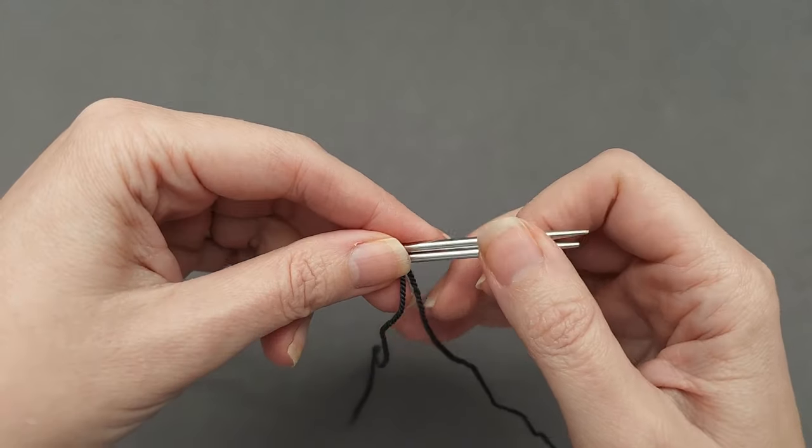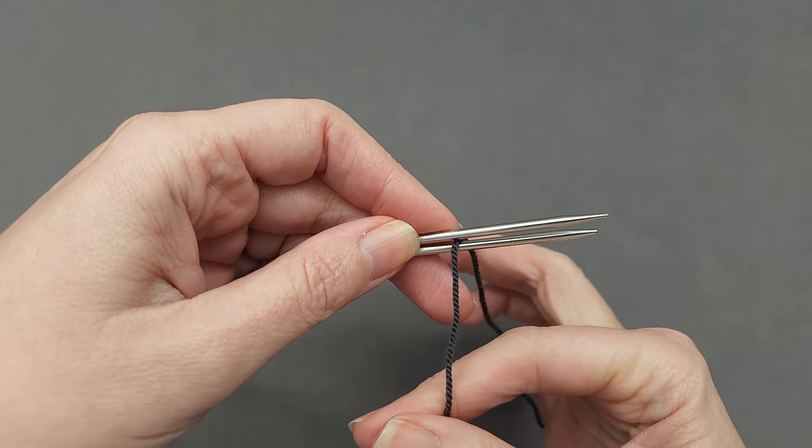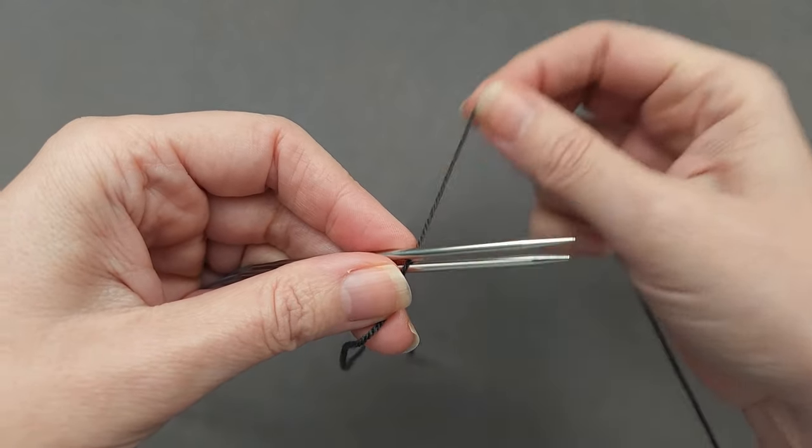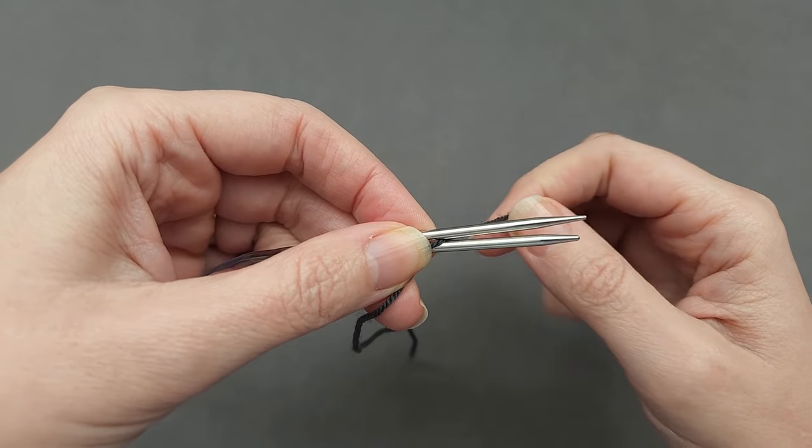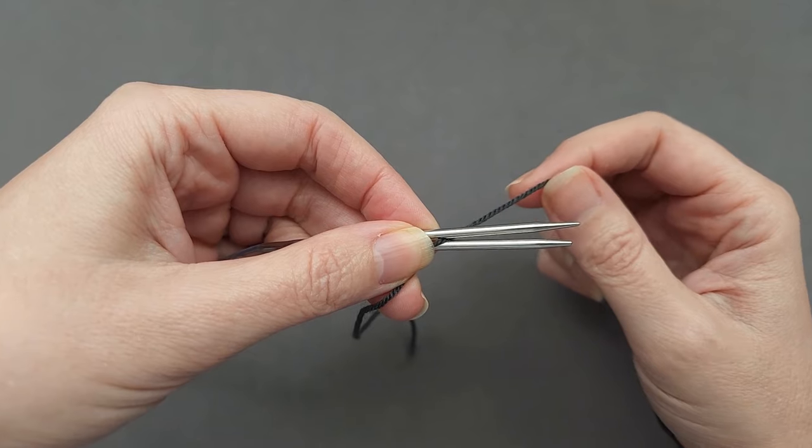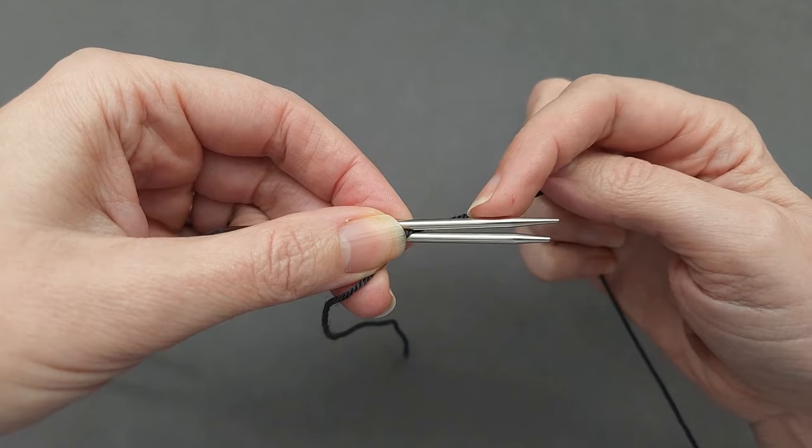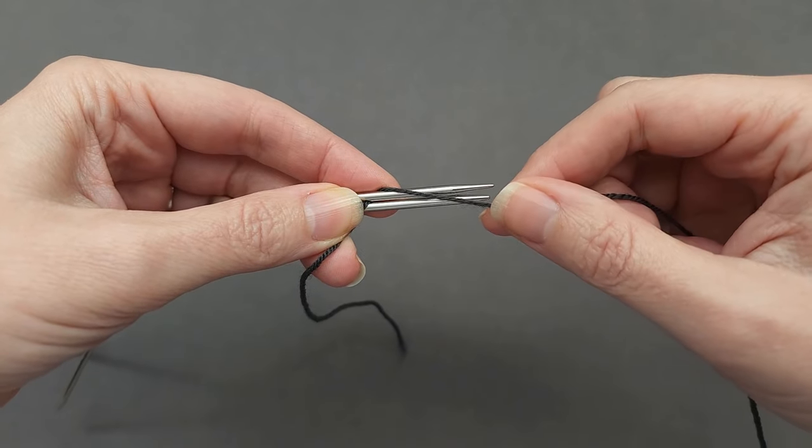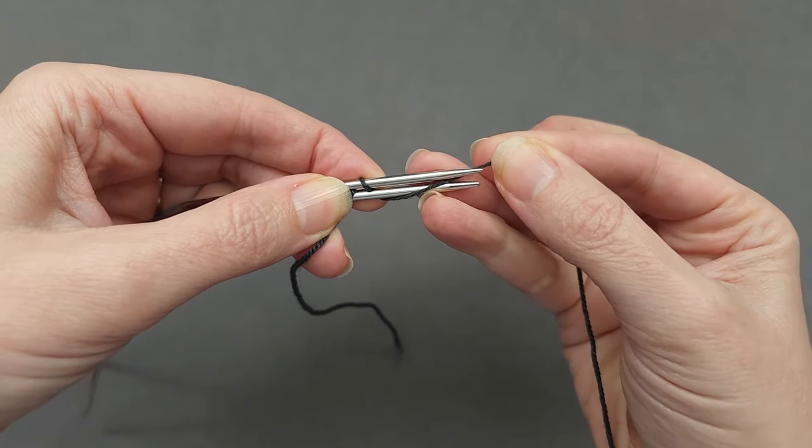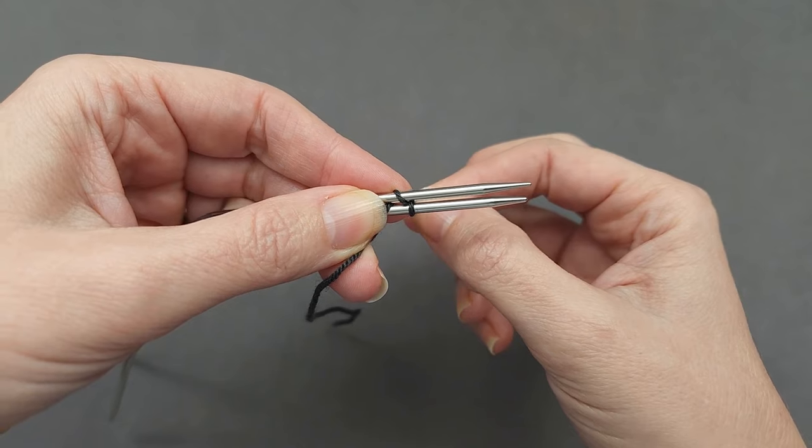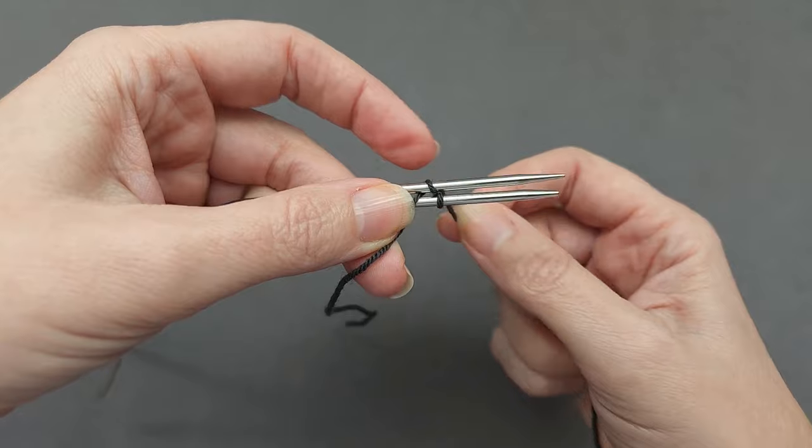The yarn tail is at the front, the working yarn is at the back, and then pinch it between the needles. Then we'll wrap the yarn around the needles in a figure-8 pattern, starting with the top needle. So wrap around the top and then between the needles, and around the bottom needle and between the needles. Then we've cast on two stitches, one on each needle.